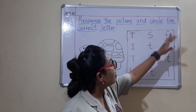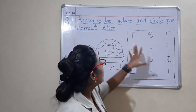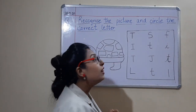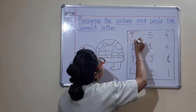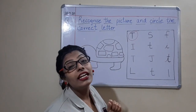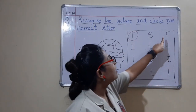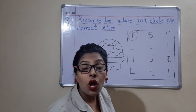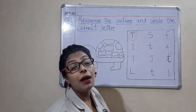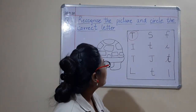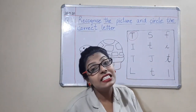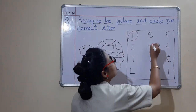Shall we see where we can find T in this box? Is this letter T? Yes, capital block letter T — so we will circle it. Is this letter T? No, this is capital block letter S. Is this letter T? No, this is small block letter F. Is this letter T? Yes, small block letter T — so we will circle it.